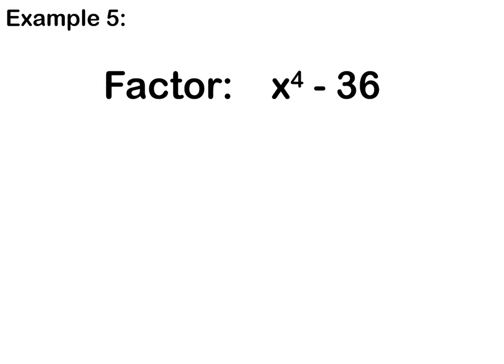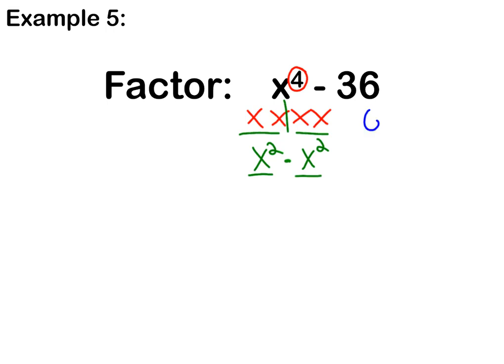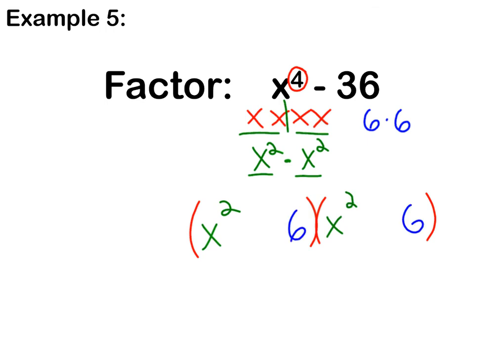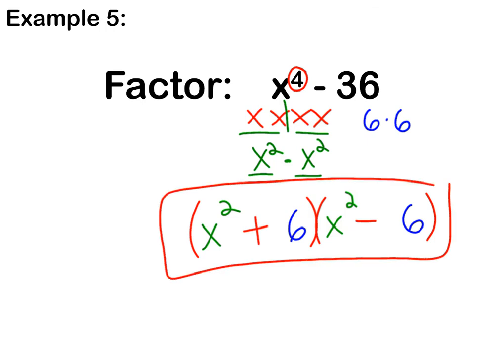Now when we're taking a look at example 5, the big difference we should notice is this x to the 4th. When you're talking about x's, x to the 4th is 4 x's. So if I had to say what times itself gave me x to the 4th, I'd split it in the middle — that means x squared times x squared. So in order to make x to the 4th, I actually have x squared times x squared. Over here we have 6 times 6. Set up your parentheses, put your first term in the front, your second term in the back, and finish with opposite signs. This is the factored form of x to the 4th minus 36.